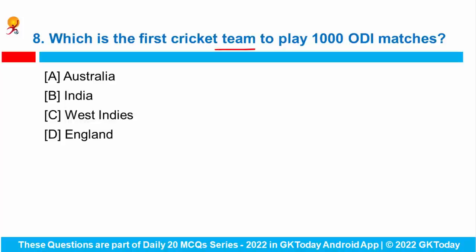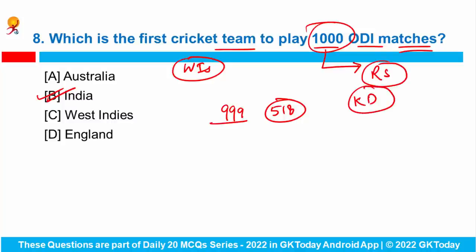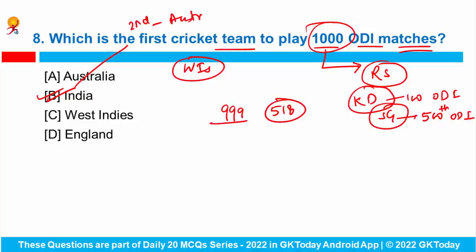Question number 8: which is the first cricket team to play 1,000 ODI matches? The Indian cricket team created history by becoming the first team to play 1,000 ODIs during their game against the West Indies. Before this game, India had played 999 ODIs and recorded 518 victories. Rohit Sharma led the Indian team in their 1,000th ODI. Kapil Dev was the captain in India's 100th ODI, while Sourav Ganguly led the Indian team in its 500th ODI. After India, Australia had played 958 ODIs, and third was Pakistan with 936 ODIs.